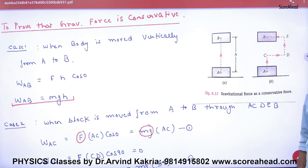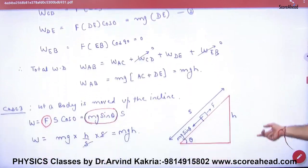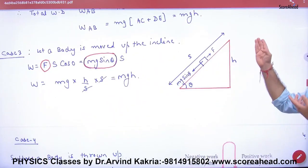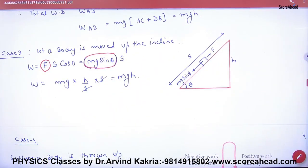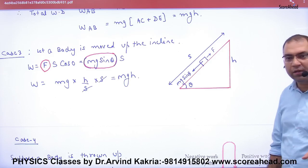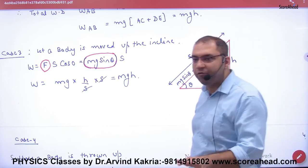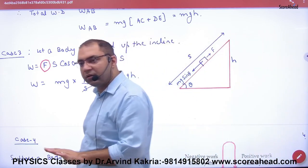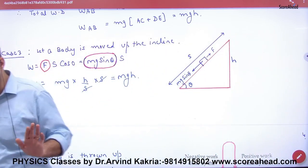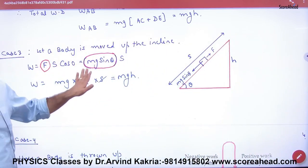We will calculate the amount of work done for each path. Then we will go to the third case. In the third case, we will go from B to A. If the answer is the same in all cases, then we admit that gravitational force is conservative. Now we will start with the different cases.